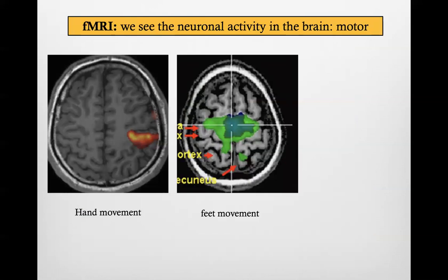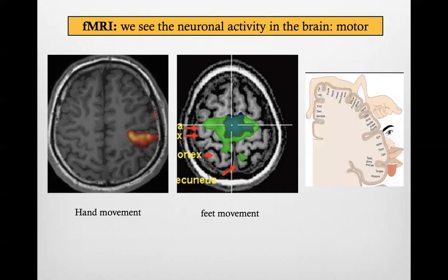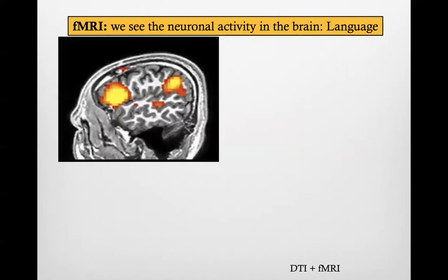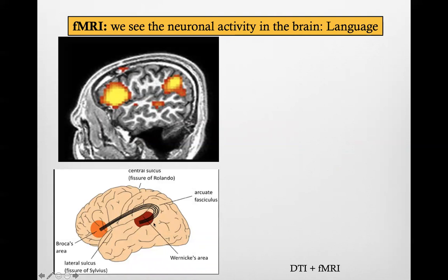In functional MRI, we see the activity in the brain. If we are doing a specific action, we use a specific part of the brain — for example, when we move the hand or the feet. That part of the brain needs more oxygen, and this oxygen consumption is picked up by the functional MRI sequence. The Penfield homunculus tells us which areas of the brain we expect to activate for a specific movement. The same happens with language: Broca area and Wernicke area are activated, and we can fuse DTI and functional MRI.